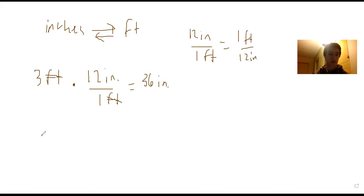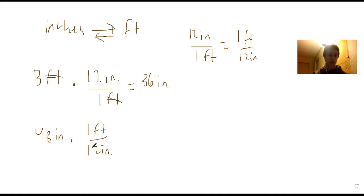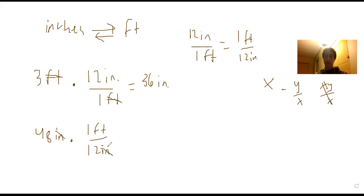If we start with 48 inches and want to convert to feet, we flip the conversion factor. We put one foot over 12 inches so that the inches cancel out. We treat units just like variables — like x times y over x cancels the x's. So we get 48 over 12 feet, which is 4 feet.